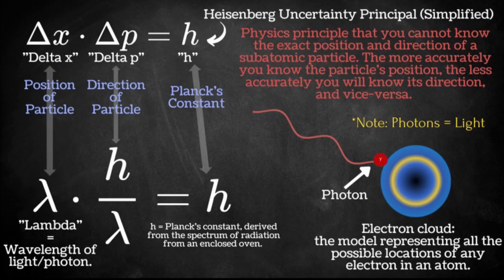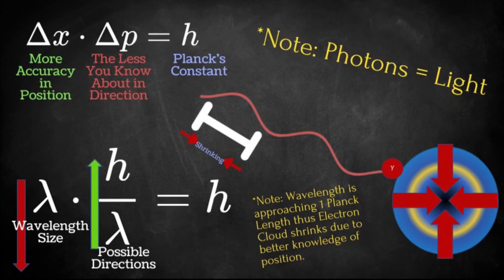You can technically measure energy to infinite decimal places, but you won't have 100% certainty in measurement beyond the Planck length. Let's say you want to measure the exact position of an electron in an electron cloud. When you decrease the wavelength of the photon, you get closer to where the electron is, but you lose certainty about the direction of the electron.